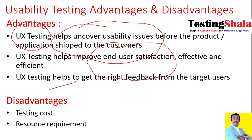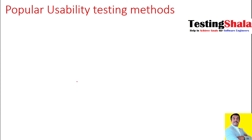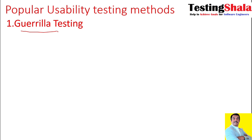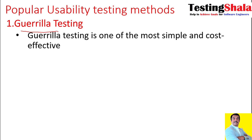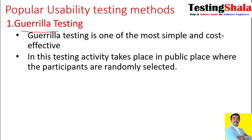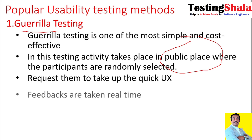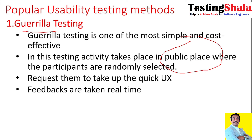There are various popular testing methods adopted as part of usability testing. The first method is gorilla testing. Gorilla testing is a very simple and cost-effective testing approach where all testing is performed in a public place or public domain. Participants are randomly selected, given the application, and they test it openly and provide feedback, which we can then use to implement user experience improvements.